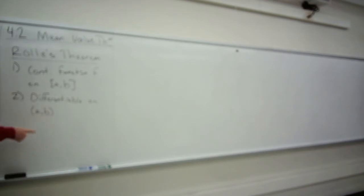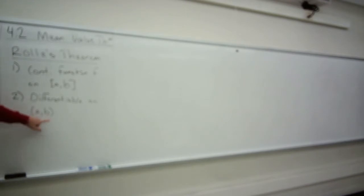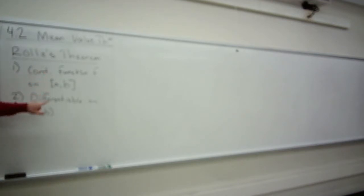The slope at the endpoints, we don't care about. If you can't tell me the slope at A, that's okay. If you can't tell me the slope at B, that's okay. But you must be able to differentiate the function on the open interval.